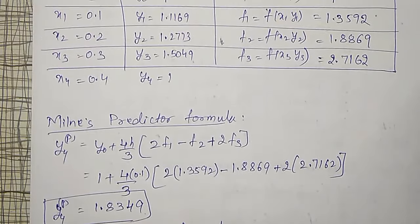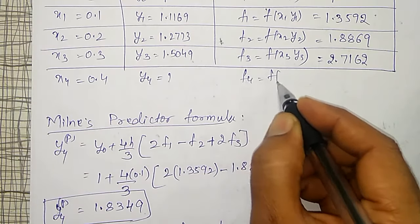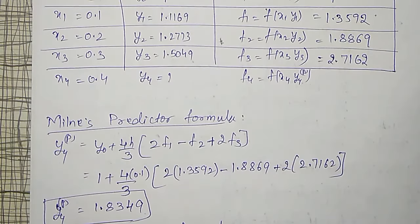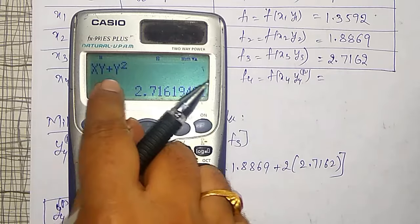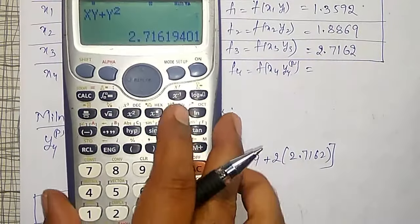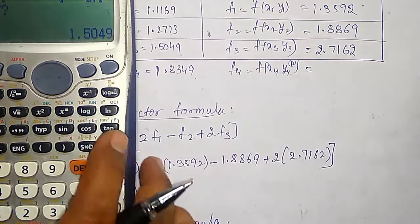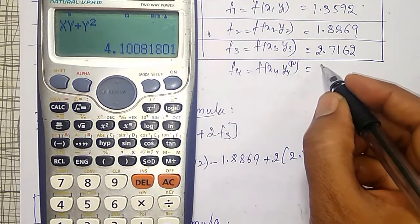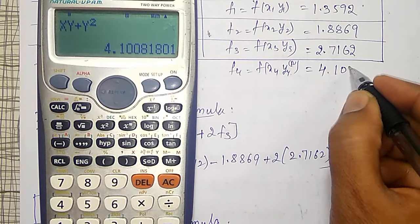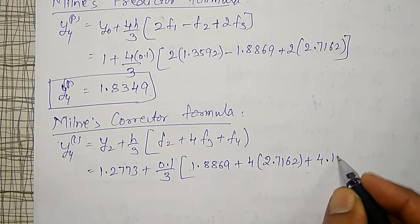What is my f4 then? To find out f4, I will come back to the table here. x4 is 0.4, y4 is not known. To calculate f4, f of x4, y4: use the predictor value already calculated, that is 1.8349. In your calculator, already that formula is operated. Press the calc button so that x y plus y squared function is already there. x equal to 0.4 and y value is the y4 predictor value, that is 1.8349, equal to, that is 4.1008. This is my f4.